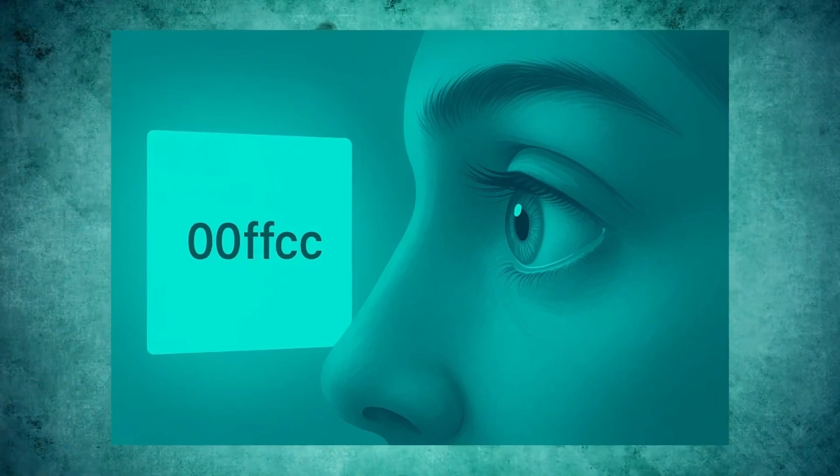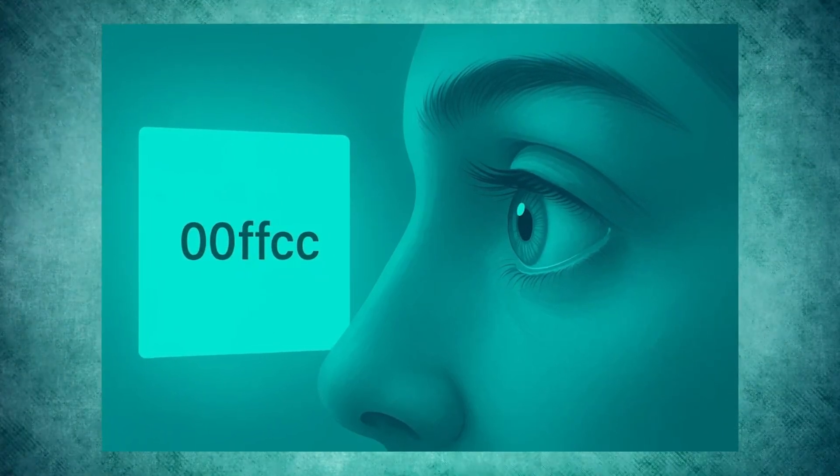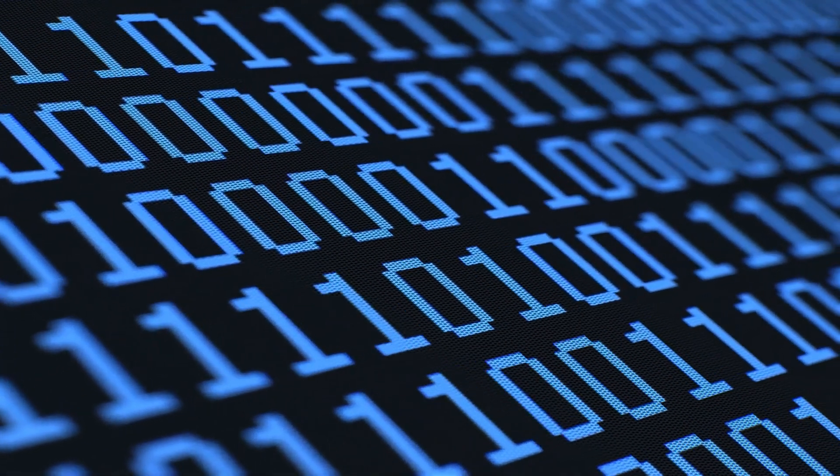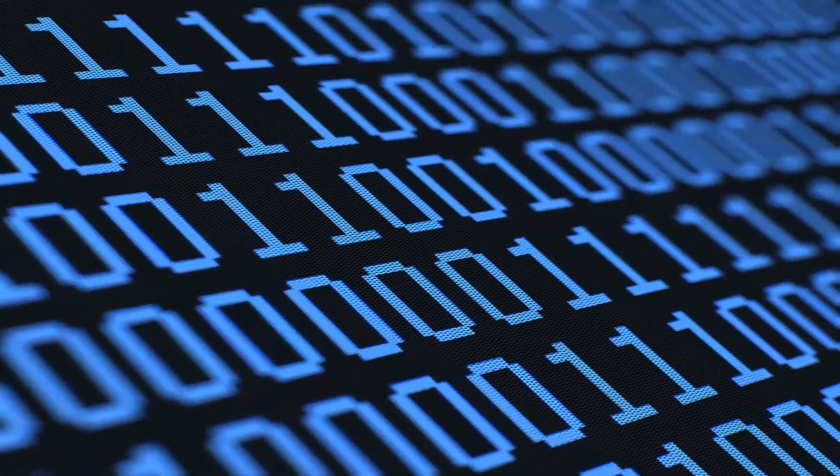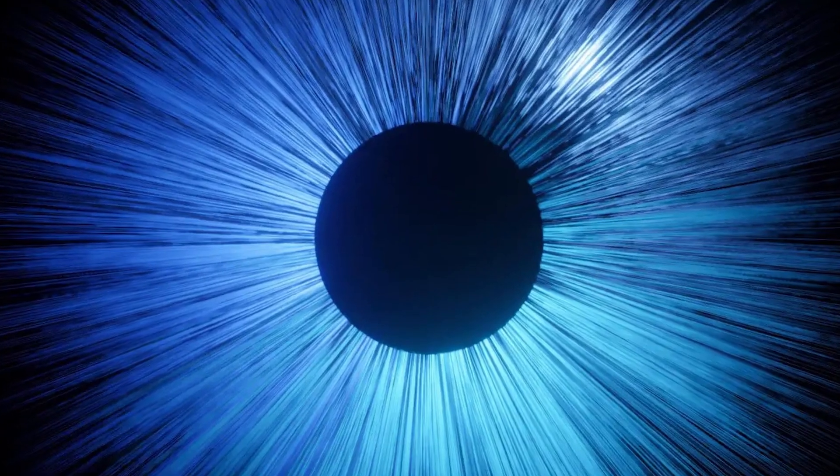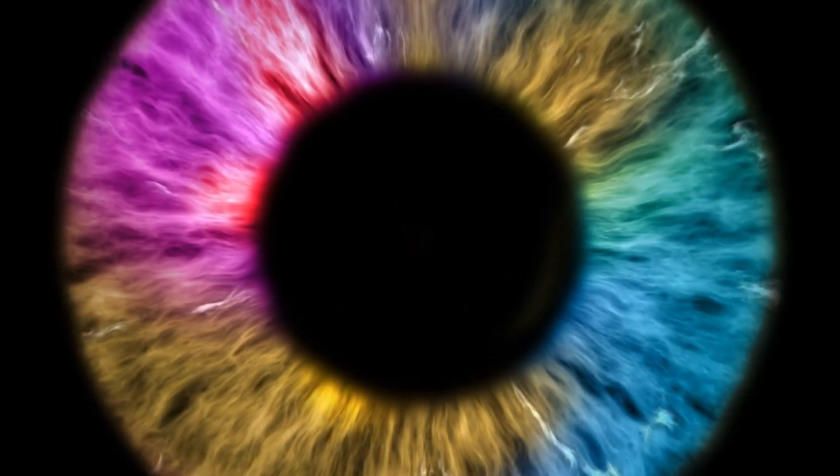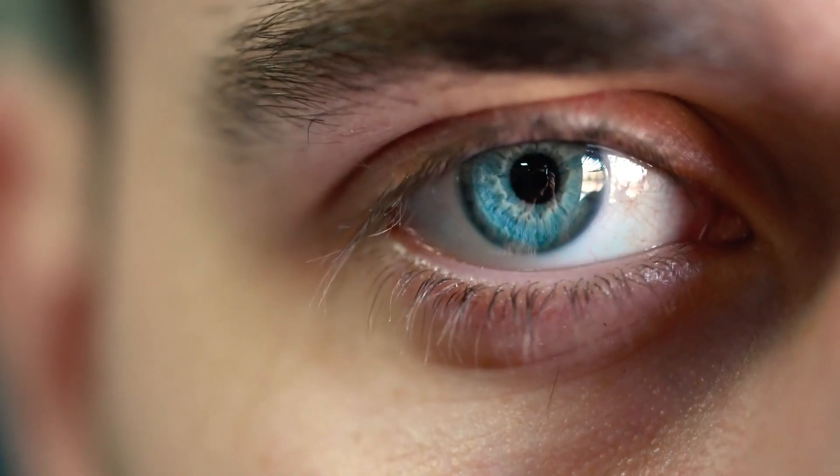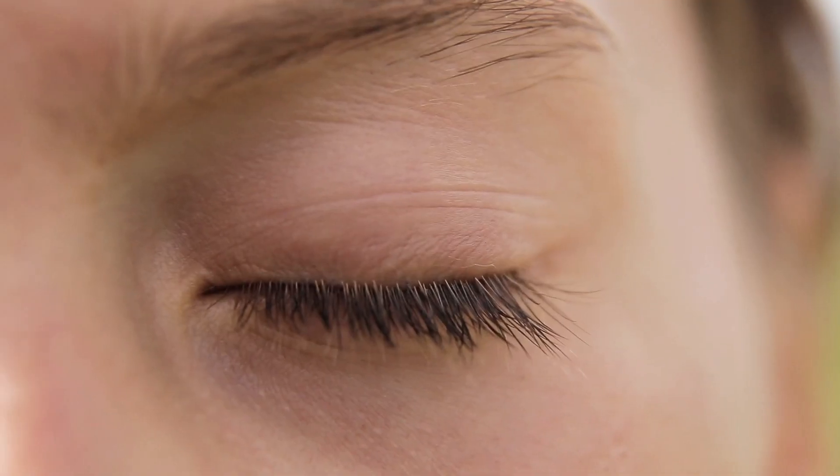The color was consistently described as a hypersaturated teal or peacock green, more vivid than any color naturally occurring or reproducible on screens. Why is it called Olo? The name Olo is inspired by binary code, specifically the sequence 010, which corresponds to the activation pattern of the cone cells: L0, M1, S0. This nomenclature reflects the unique stimulation of only the M-cones during the experiment.